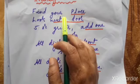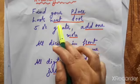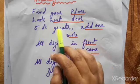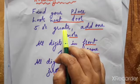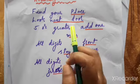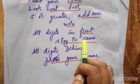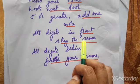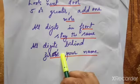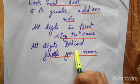To summarize the poem: Find your place — check the place value of the number. Look next door — check the next neighboring digit. Five or greater — if that digit is five or more, add one to your rounded digit. All digits in front stay the same — no changes to those. All digits behind become zero.